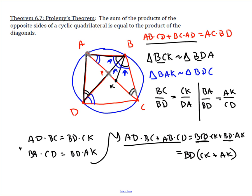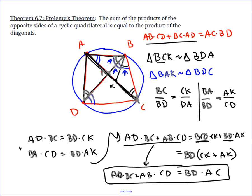But CK plus AK is exactly equal to the other diagonal AC by segment addition. And so BD times AC equals this, which is AD times BC plus AD times CD. Which is Ptolemy's theorem and is a very powerful and useful theorem whenever you find cyclic quadrilaterals in the problem.